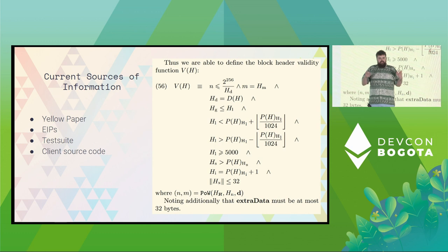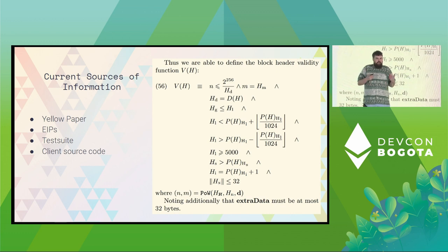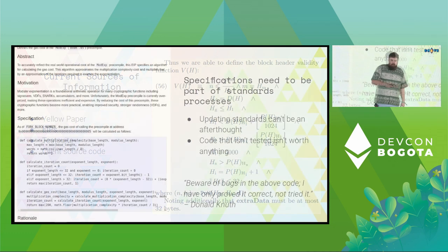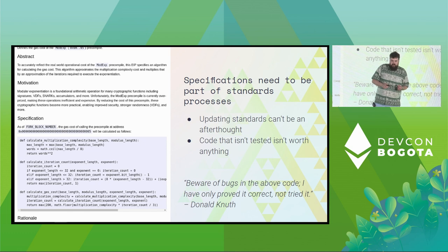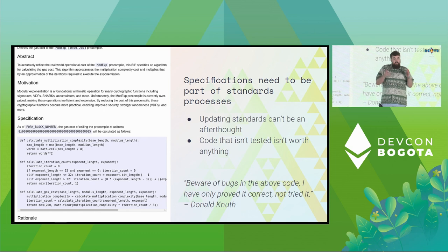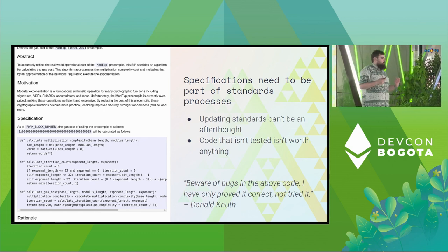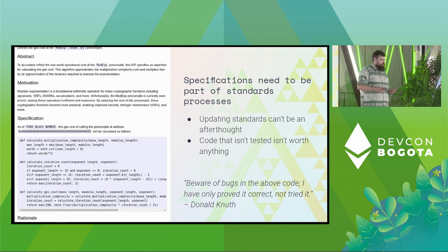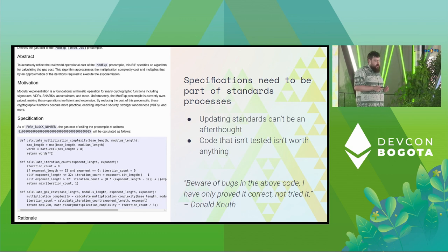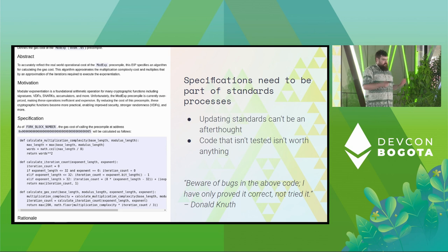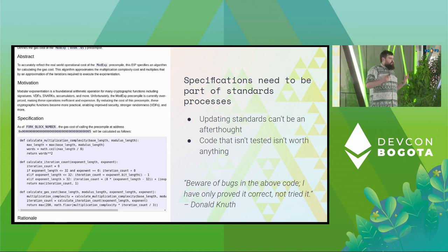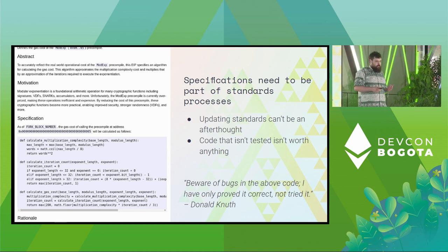These clients are big, complicated, high-performance pieces of code. They're not designed for the reader. The other thing about specifications is they need to be part of a standards process. You can't just say we're going to implement all this stuff and then update the specifications later. This is the big problem with the yellow paper — no one proposes a change by saying this is how I would change the yellow paper, so the yellow paper just gets updated later as an afterthought. The other problem is that the yellow paper is just a document. It's not executable. You can't test whether it works. And this applies to EIPs as well.